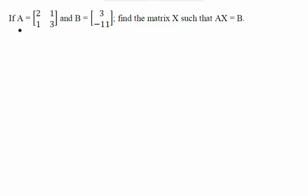The question is: if we know that A is a matrix with elements 2, 1, 1, 3 and B is another matrix with elements 3 and minus 11, then we have to find a matrix X such that AX should be equal to B.